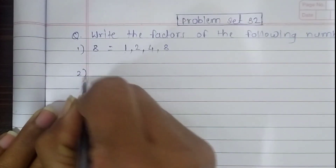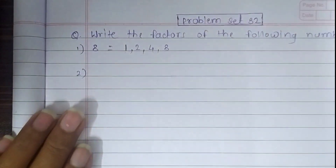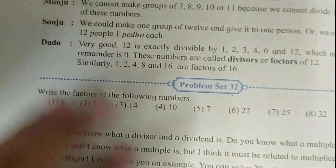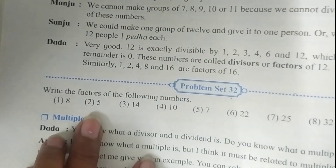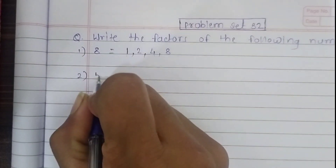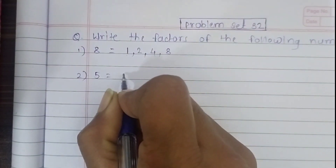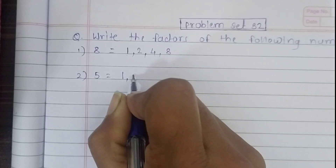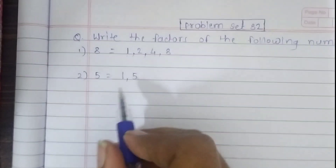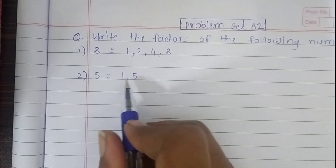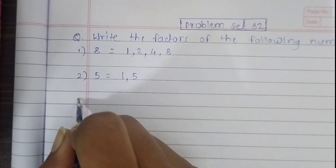Our second question is 5. Let's write the factors of 5 here. The first factor is 1, and the second factor is 5. It comes in only 2 tables — 1 and 5.